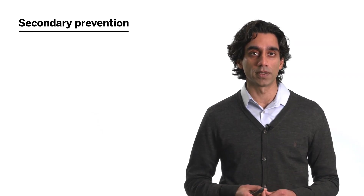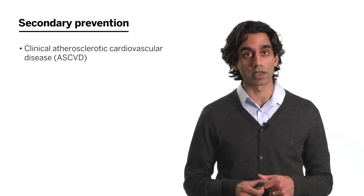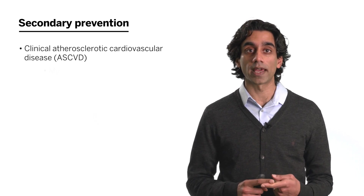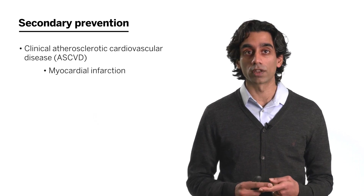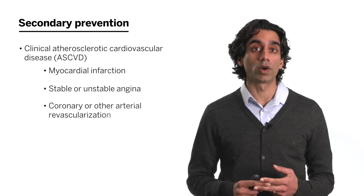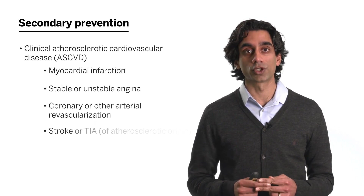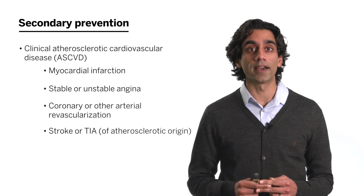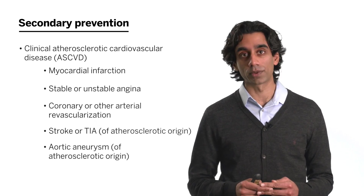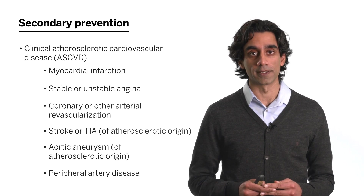Secondary prevention — this is how it's defined in the guidelines — refers to clinical atherosclerotic cardiovascular disease. Patients who have previously had myocardial infarction, stable or unstable angina, coronary or other arterial revascularization, a stroke or TIA of atherosclerotic origin, aortic aneurysm of atherosclerotic origin, and peripheral artery disease.